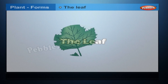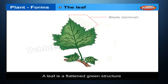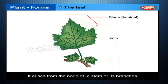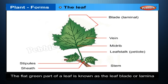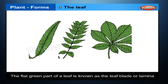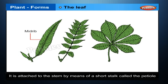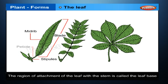The leaf is a flattened green structure that arises from the node of a stem or its branches. Leaves differ in shape and size. The flat green part of a leaf is known as the leaf blade or lamina. It is attached to the stem by a short stalk called the petiole. The region of attachment of the leaf with the stem is called the leaf base.